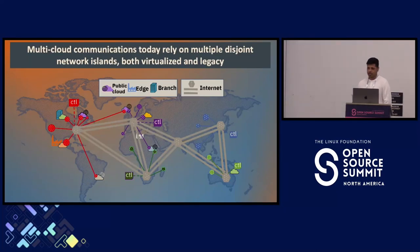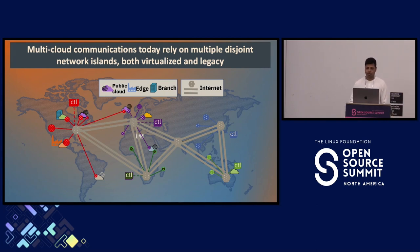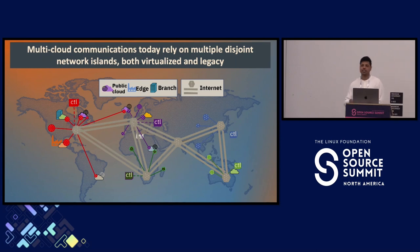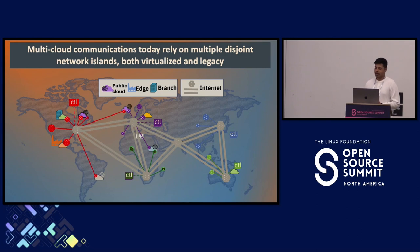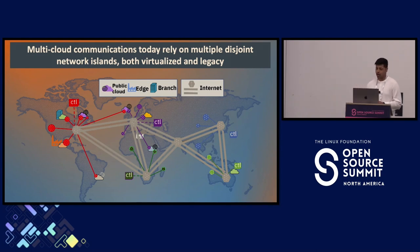While multi-cloud is definitely becoming popular, multi-cloud communications still rely on multiple disjoint network islands, which are both virtualized and legacy. Based on a Futuriom survey, one of the barriers of true multi-cloud and hybrid cloud operations is the networking technology. Most traditional networking technology was built for an era where the organization controlled both the hosting of applications and the underlying network connectivity. But these days in the cloud, applications can be hosted anywhere and network data flows can cross many boundaries, such as those of cloud hosting providers, communication providers, and enterprise networks.